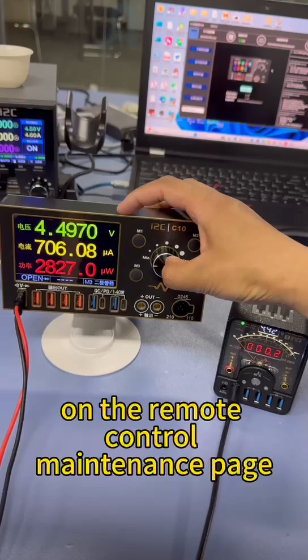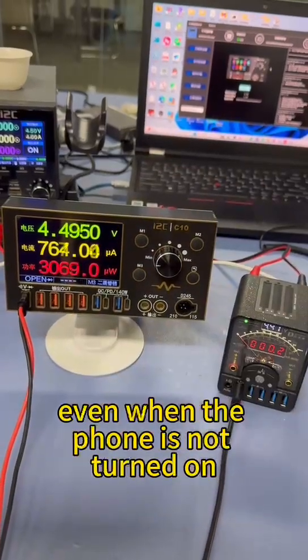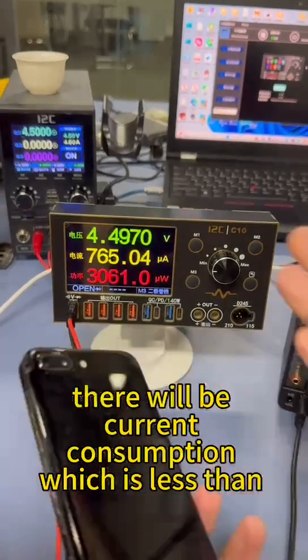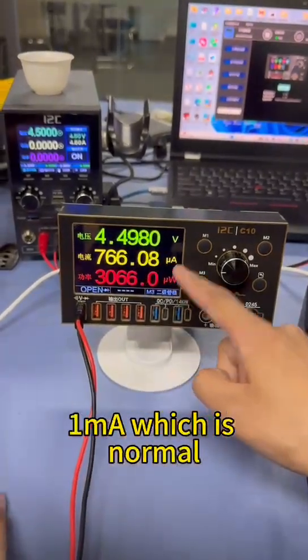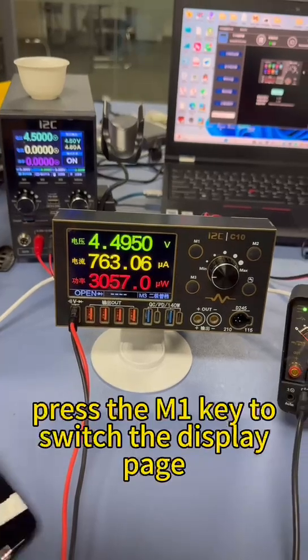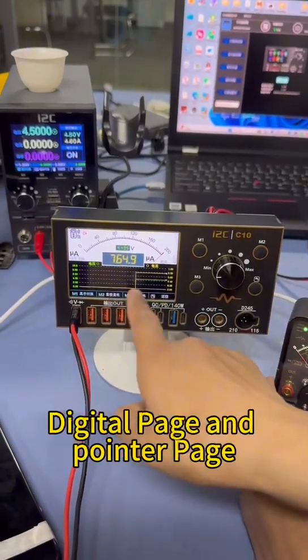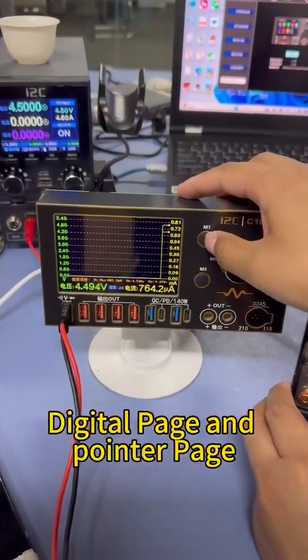On the remote control maintenance page, even when the phone is not turned on, there will be current consumption, which is less than 1MA, which is normal. Press the M1 key to switch the display page, such as the waveform display page, digital page, and pointer page.